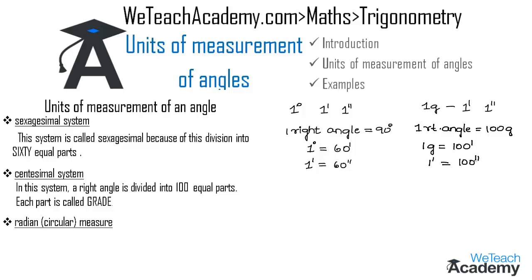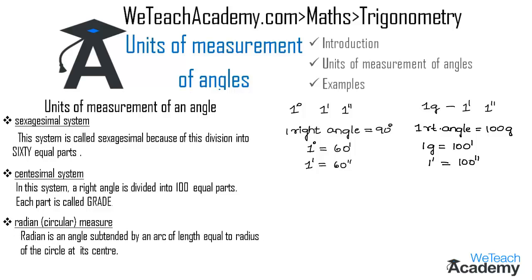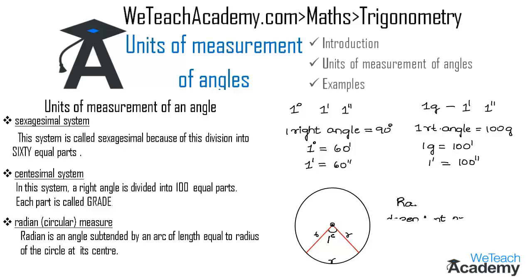Coming to the radian measure: a radian is defined as the angle subtended by an arc of length equal to the radius of the circle at its center. Consider a circle with center O and radius R, and take an arc whose length equals the radius R — the angle subtended is one radian, denoted 1ᶜ. Radian measure is also called circular measure as it is related to the circle. Note that radian is not dependent on the radius of the circle.